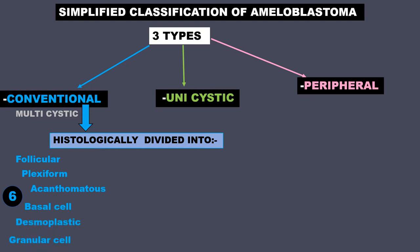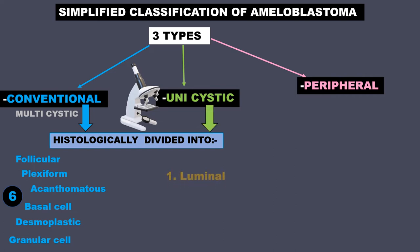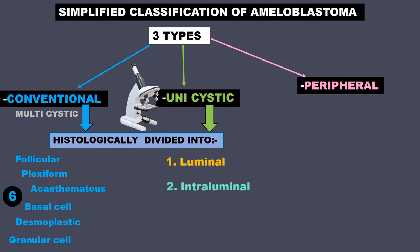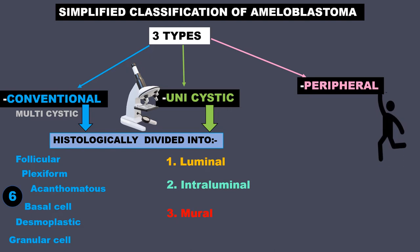Another video with lots of pictures will explain the different six types of conventional ameloblastomas. Going back to unicystic, it can be histologically divided into: one — luminal, two — intraluminal, and three — mural. Lastly, we have the peripheral type of ameloblastoma.